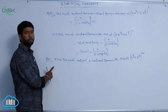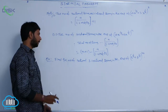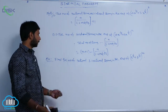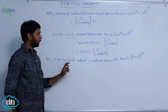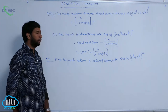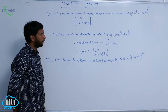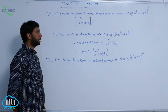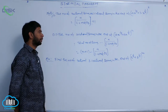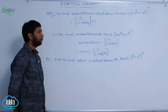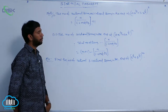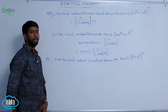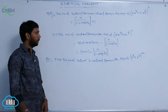Example problem: rational terms and irrational terms. Find the number of rational and irrational terms in the expansion of (5^(1/6) + 2^(1/8))^100.